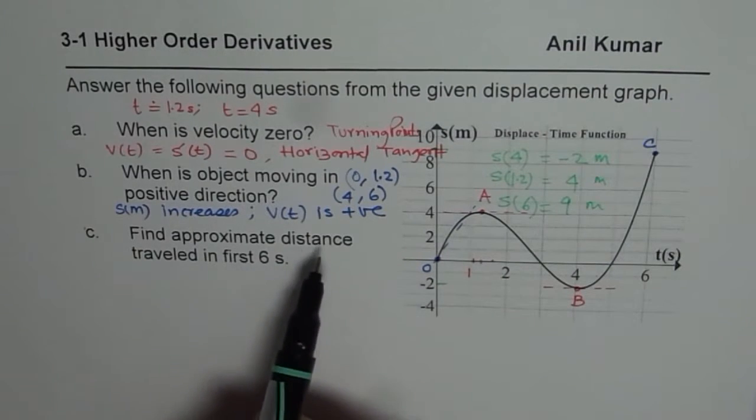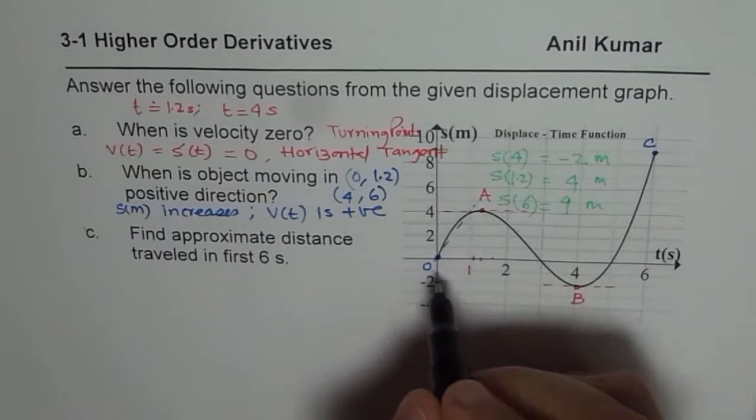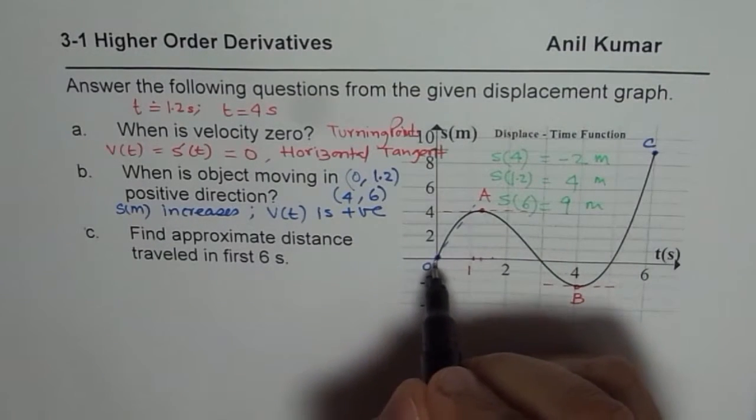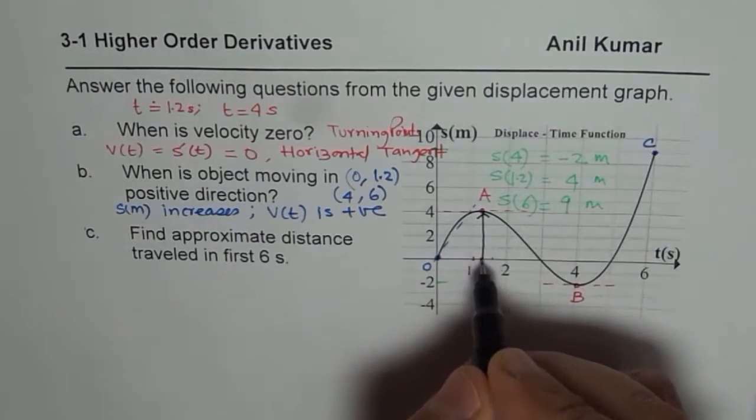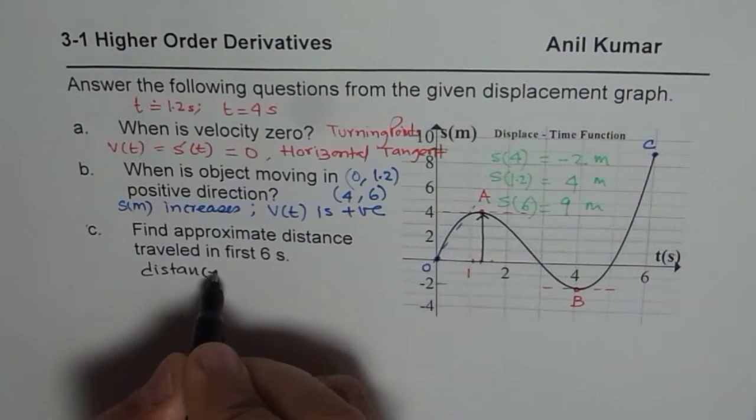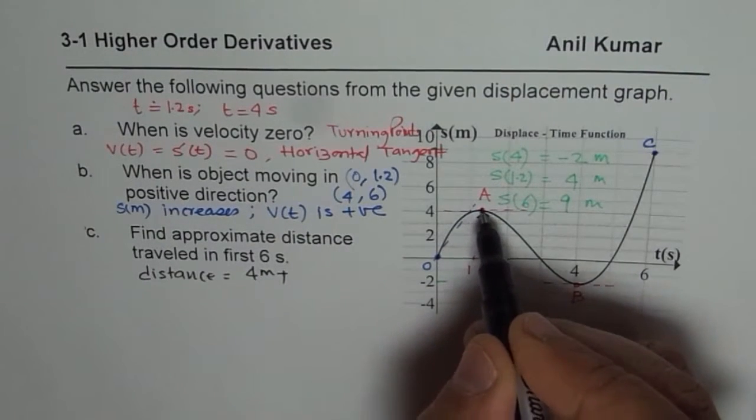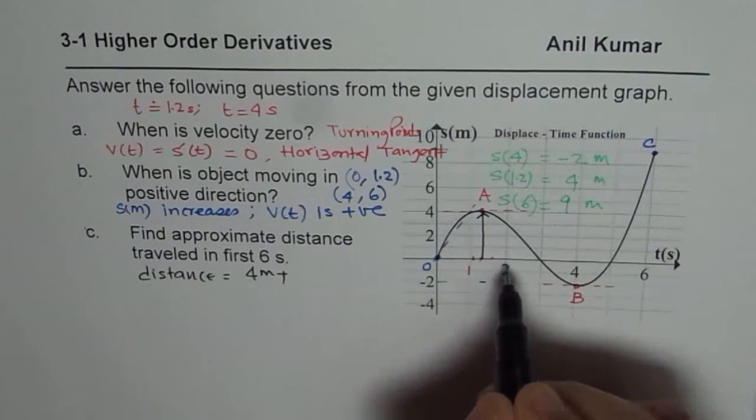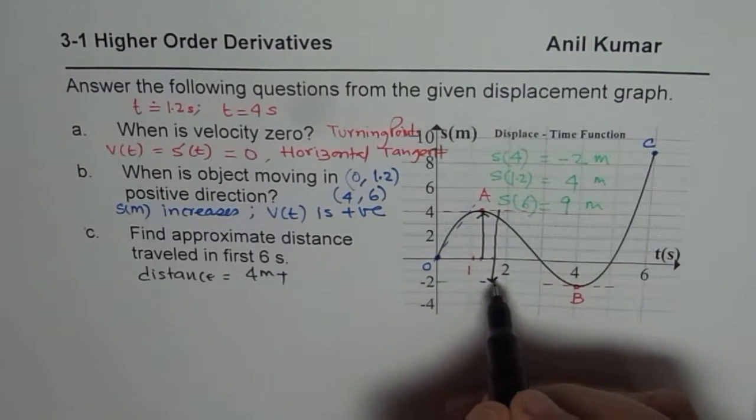It says find approximate distance travelled in first 6 seconds. So from the graph what you really notice is that from in the beginning. From 0 to 1.2 seconds the object moves 4 units up. So it is 4 units up. So distance travelled is 4 units. That is 4 meters. Plus then it comes down from 4 to minus 2. So it brings 4 to minus 2. That is to say 6 meters.